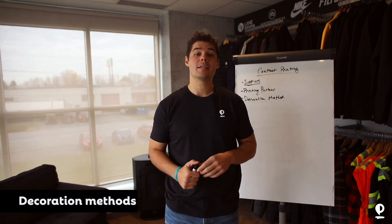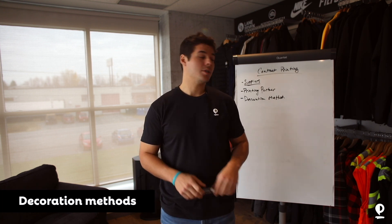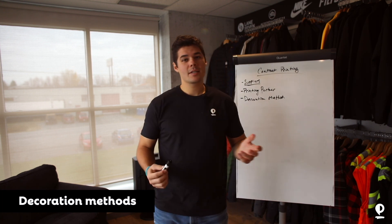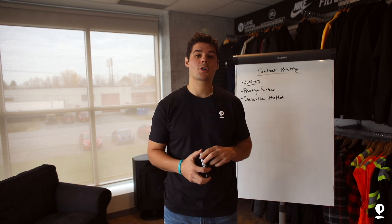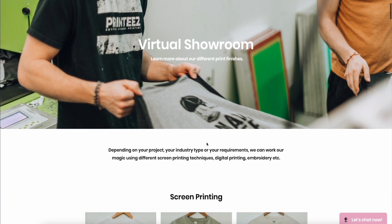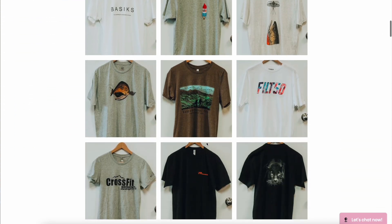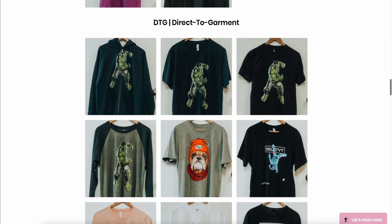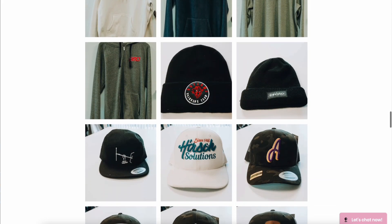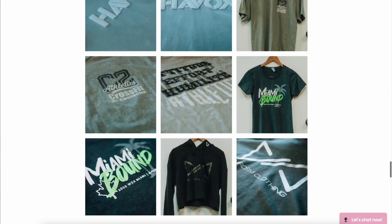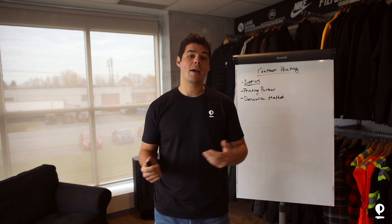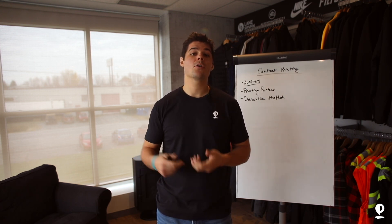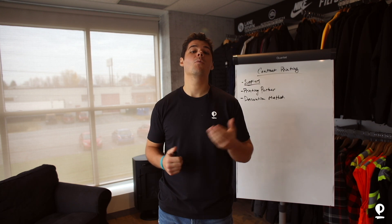The third thing you're going to want to do is educate yourself on all of the decoration methods. This is a big subject because there's a lot you can do. You can go on our website and check our online showroom to see exactly what we offer. There's also a great way to look at the garments you have at home — what's your favorite t-shirt and what's the printing method on that shirt? If you don't know, search online or bring it to your printing partner.